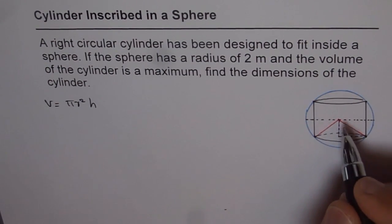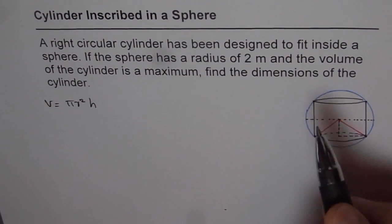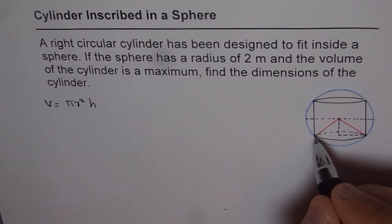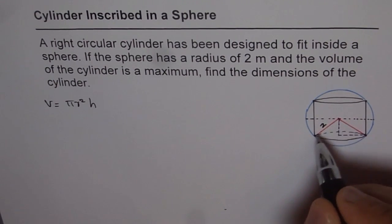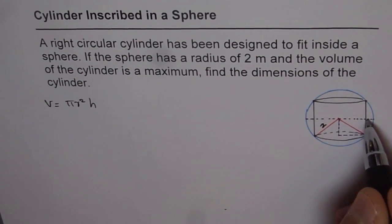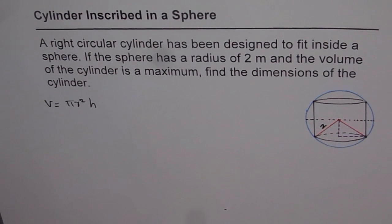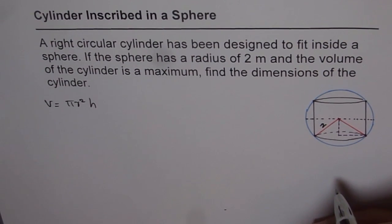We are given that the cylinder is inscribed within a sphere whose radius is 2 meters. That means from the center to the edge, this line will be 2 meters. That will help us find a relation between the radius and the height. We will try to find a relation between the height and the radius of the cylinder so that we have our equation in one variable. At present we have it in two variables.